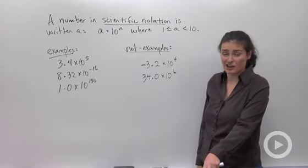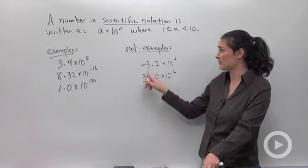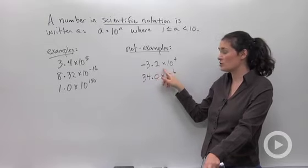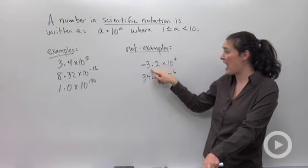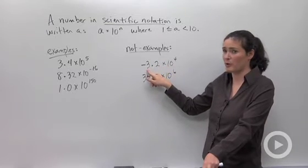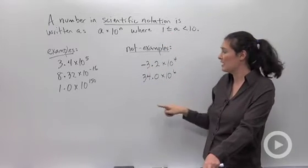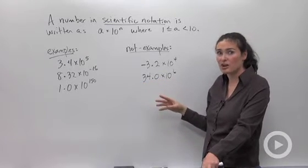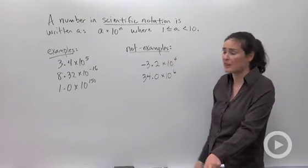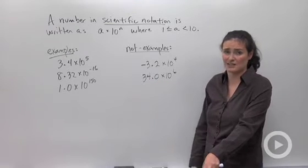Let's look at some things that are not scientific notation. Negative 3.2 times 10 to the fourth. The times 10 to the fourth bit is good, but my a value is negative 3.2. It doesn't work. This one is the same reason. Here I have an a value that's 34. It's way bigger than 10. So this guy does not count as scientific notation.